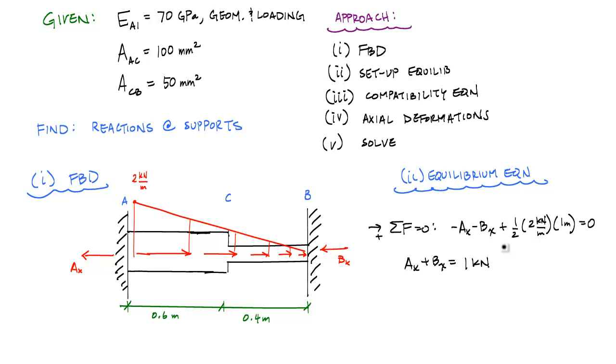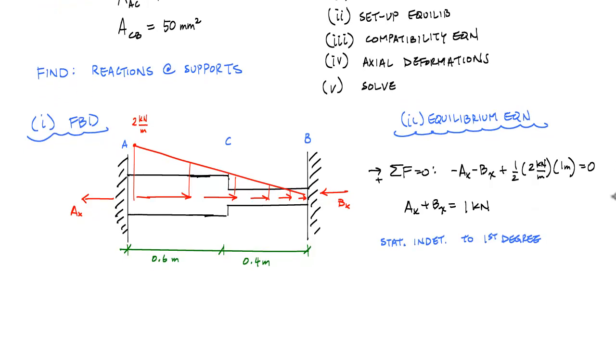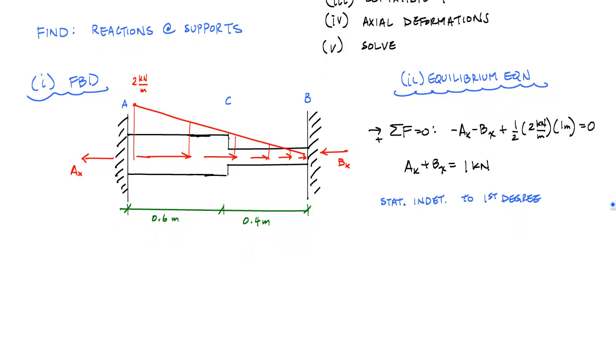This is the only equilibrium equation available to me because my vertical reactions and my moment reactions at these fixed supports are going to be 0 because I have no loading in that direction. And so what I have here is one equation and two unknowns. I am statically indeterminate to the first degree. Now this means I need a compatibility equation to describe the geometry of this structural system, so that I can solve for these unknowns. So step 3, I'll call this a compatibility step.